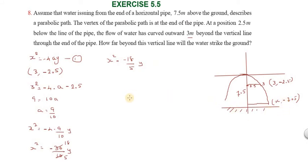At y = -7.5, x² = -18/5 × (-7.5). x² = 27.